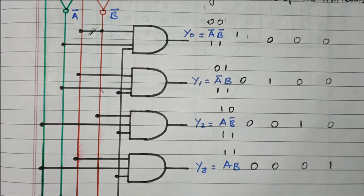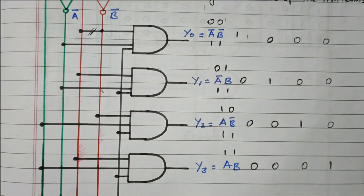So in this video we discussed the 2-to-4 decoder, also called a binary decoder. We discussed the truth table, and based on the truth table we discussed the logic diagram, and for each and every possibility we verified the output. Subscribe the channel for more videos and notifications. Soft copy of this material is available in the drive; the link is given in the description box. Thank you for listening.